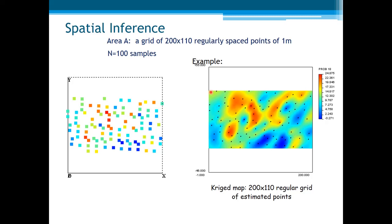This is the Kriging map, where we can easily identify the areas with high and low values. We can also see the main trends imposed — or suggested — by the direction of the variogram, which is anisotropic.